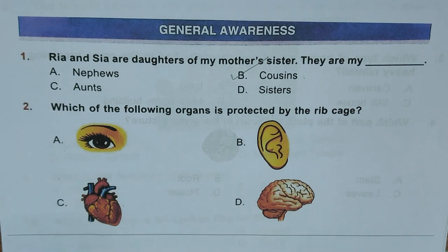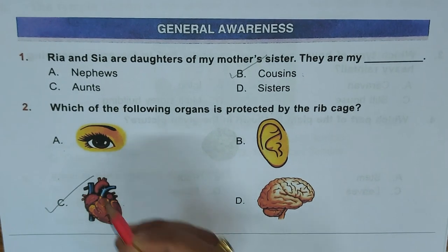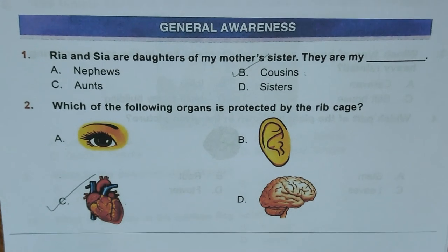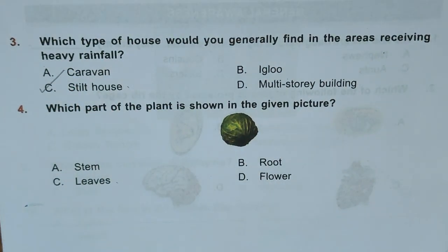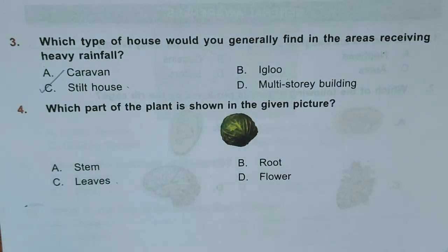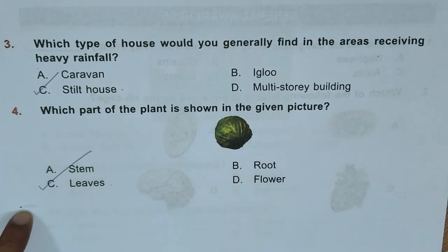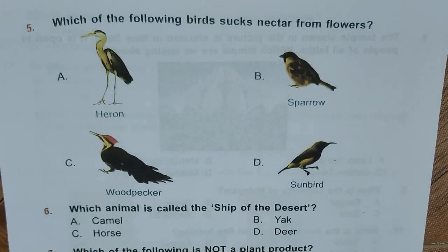Question 3: Which type of house would you generally find in areas receiving heavy rainfall? A. Caravan, B. Igloo, C. Stilt house, D. Multi-story buildings. Correct answer is C, Stilt house. Question 4: Which part of the plant is shown in the given picture? This is a cabbage. Options are A. Stem, B. Root, C. Leaves, D. Flower. Correct answer is C, Leaves.